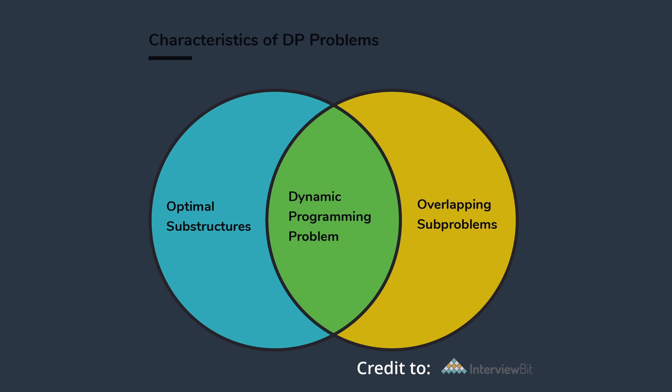A problem is a dynamic programming problem if it satisfies two conditions. The first one: if the problem can be divided into subproblems and its optimal solution can be constructed from optimal solutions of the subproblems — this is called optimal substructure. As for the second condition, this is known as overlapping subproblems, which is exactly what it says: if the subproblems overlap with each other. So let's take a closer look at the first concept, optimal substructure.